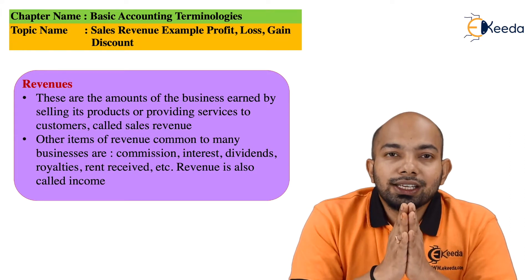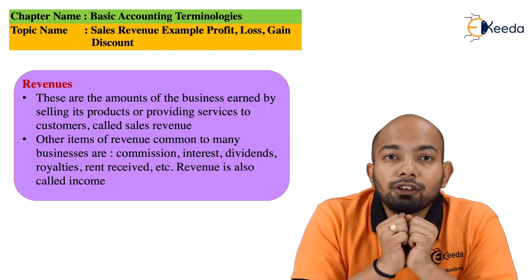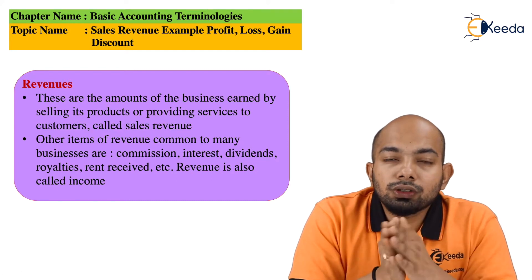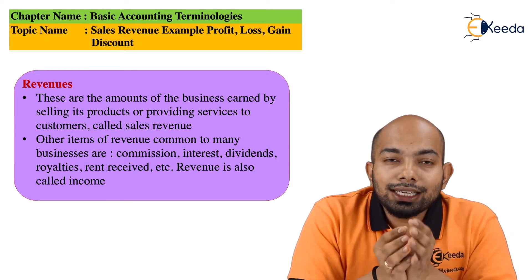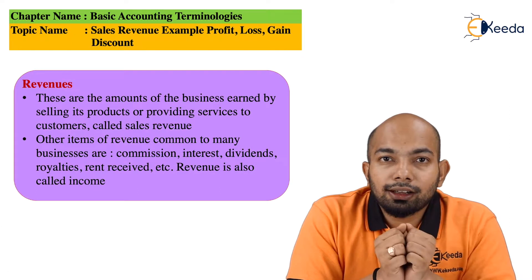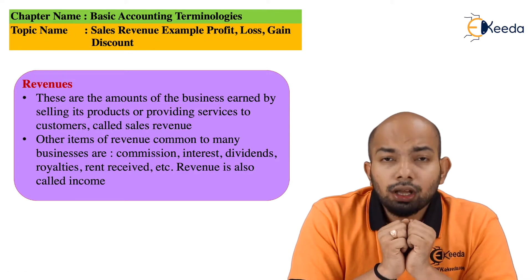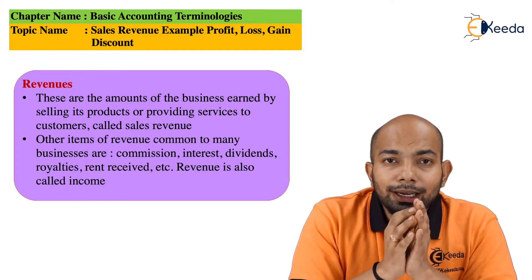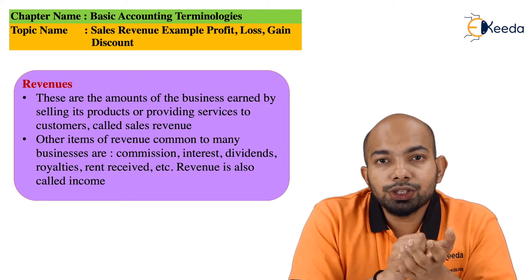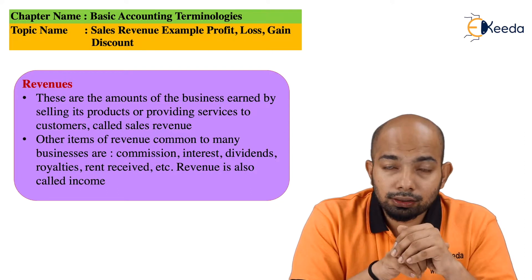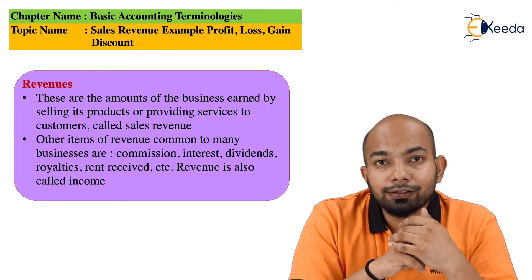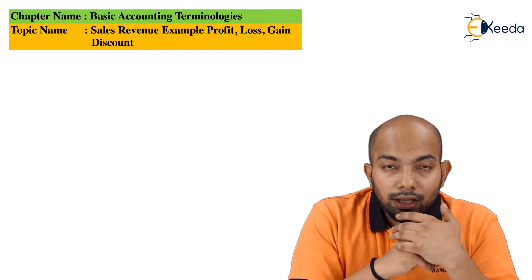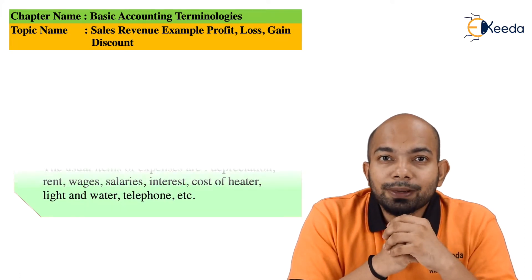So if you have a business of selling apples or selling garments, and the amount that you earn because of selling these things, that specific thing is termed as revenue. There are different kinds of revenues as well. It may be commission earned, it may be interest earned, or it may be a dividend received by investment — that is also termed as revenue. Next one will be expenses.